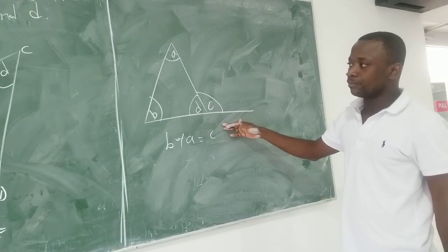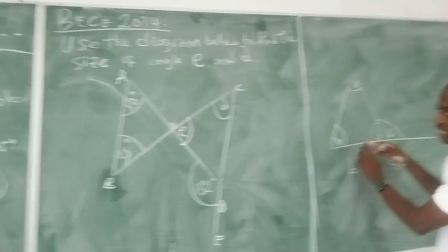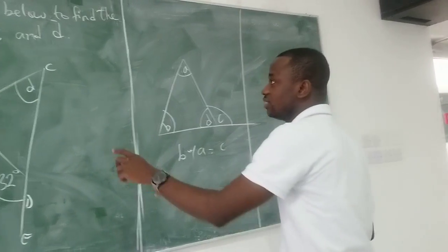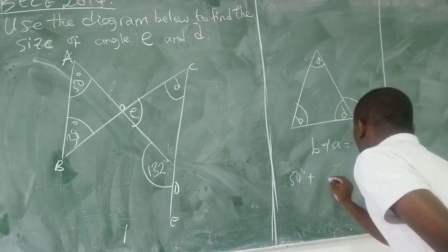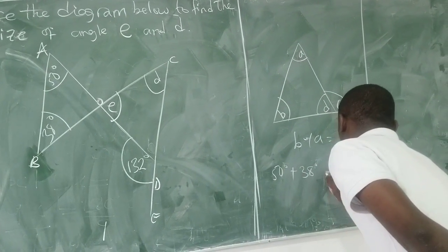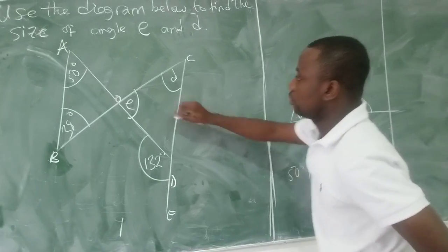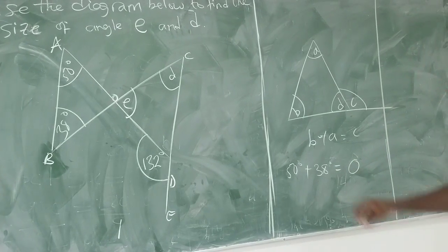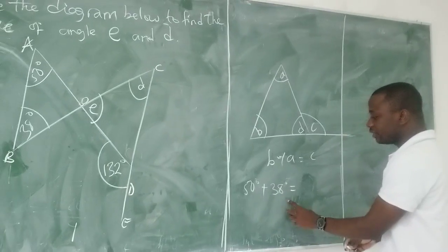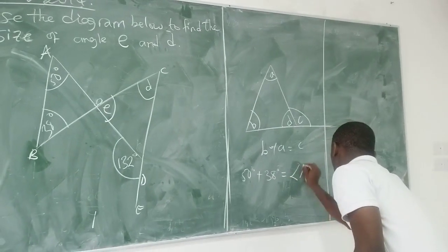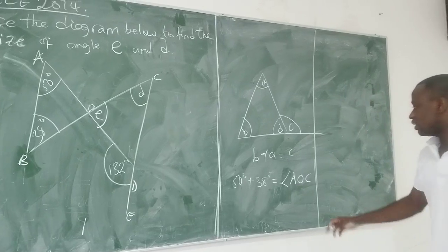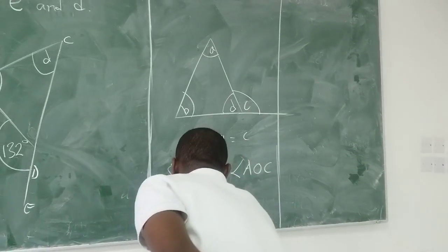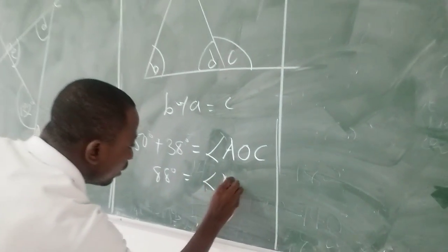You can think of other ways. So if I go by this idea, I can say that 50 degrees plus 38 degrees should be equal to this size — let's call it O. So 50 degrees plus 38 degrees should give us angle AOC. That means 88 degrees is equal to angle AOC.